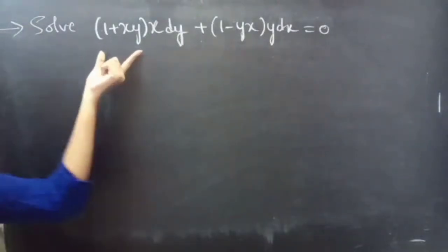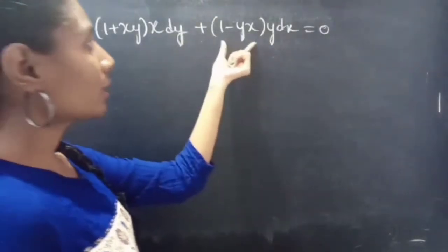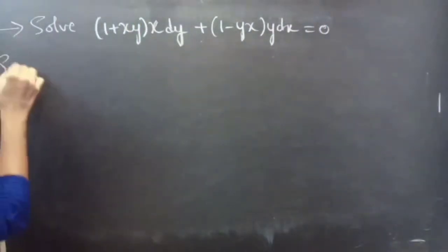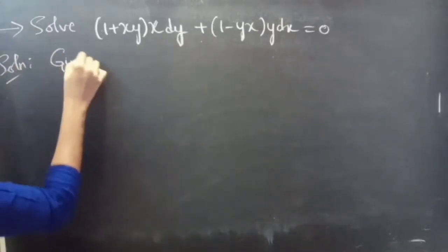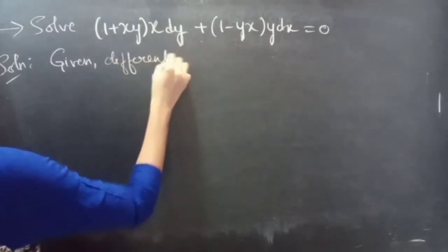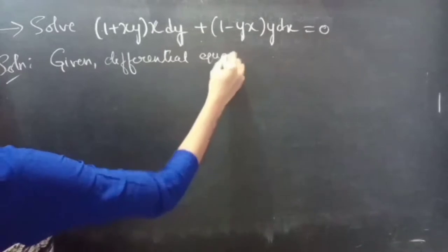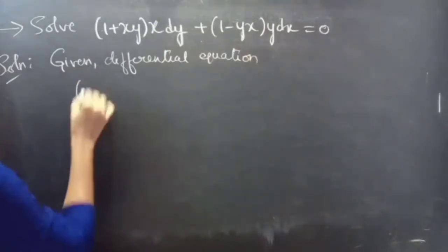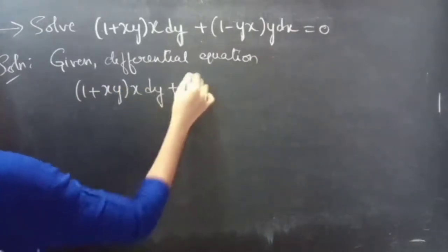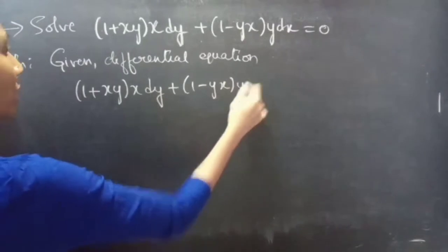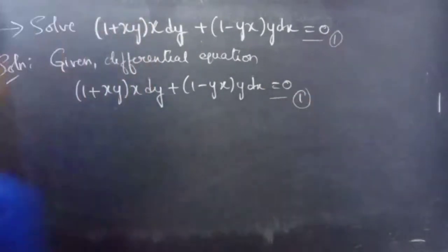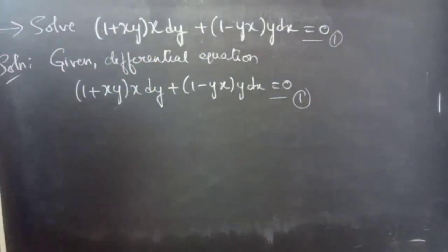Problem: Solve (1 + xy)·x·dy + (1 − yx)·y·dx = 0. Solution: Given differential equation. So, (1 + xy)·x·dy + (1 − yx)·y·dx = 0. Consider it as equation (1).